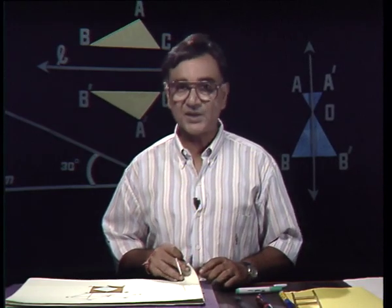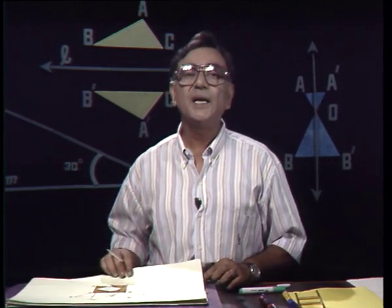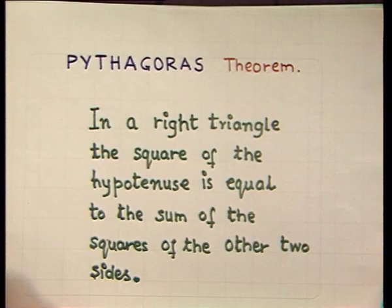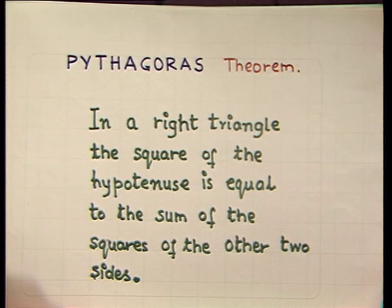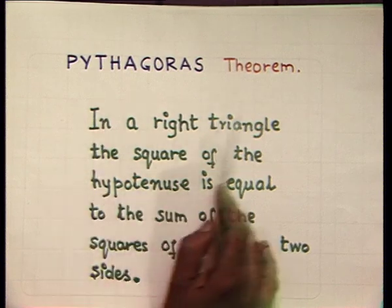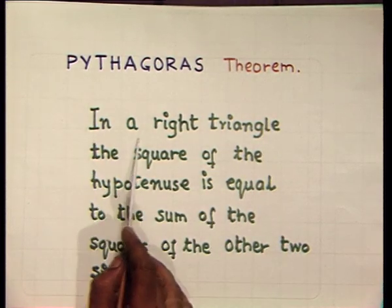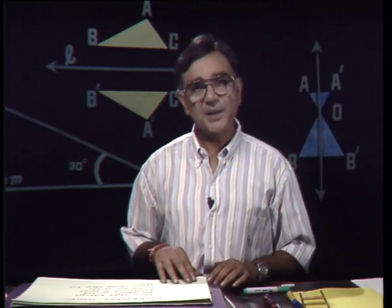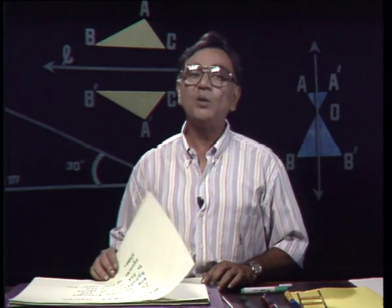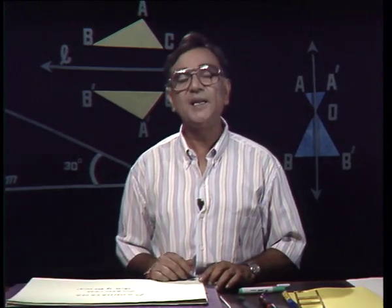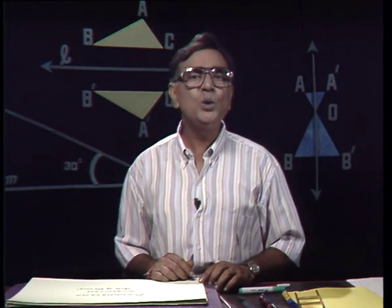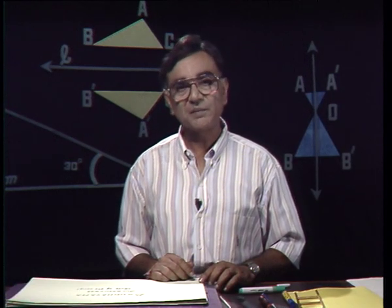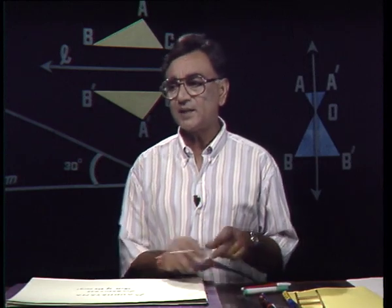This concept — that the square on the hypotenuse is equal to the sum of squares on the other two sides — was given by a Greek mathematician and philosopher known by the name of Pythagoras in the year 550 BC, and it is stated as Pythagoras theorem. According to Pythagoras theorem: in a right triangle, the square of the hypotenuse is equal to the sum of the squares of the other two sides. Though the credit for this theorem goes to Pythagoras, it was very well known to Indians about 200 years before Pythagoras, and we can find mention of it in Baudhayana's Sulva Sutra.